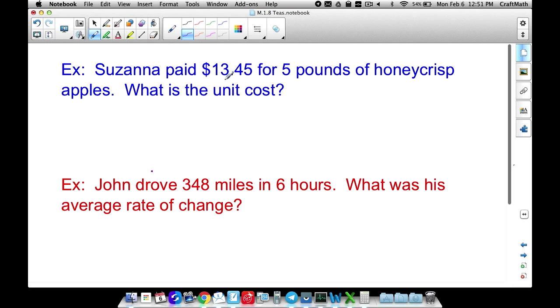Now, this next example, Susanna paid $13.45 for five pounds of Honeycrisp apples. What is the unit cost? Well, what is unit cost? Unit cost is going to be cost per one unit. One unit. In this case, it's going to be per one pound. When you go shopping at Foodline, Walmart or wherever and you're buying vegetables, you always see that price. That price they give you is the price per pound, at least in America. You know, some other places it might be cost per kilogram or something like that. But nonetheless, cost per pound.